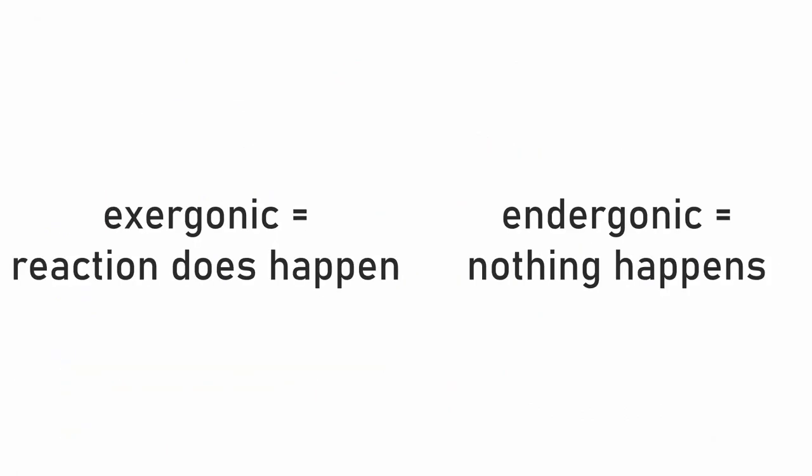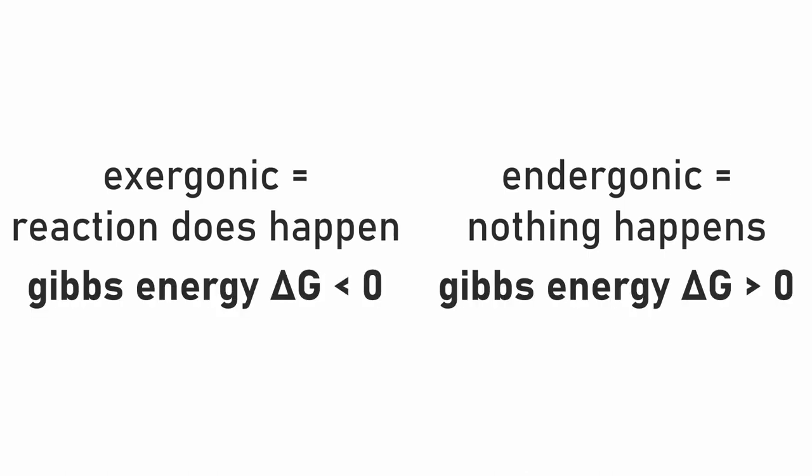I want to begin with just a few definitions. Exergonic basically means that a reaction does happen spontaneously. More technically spoken, it is a reaction with negative change of Gibbs free energy. This Gibbs free energy, delta G, is a parameter used to describe a change of entropy in a closed system.